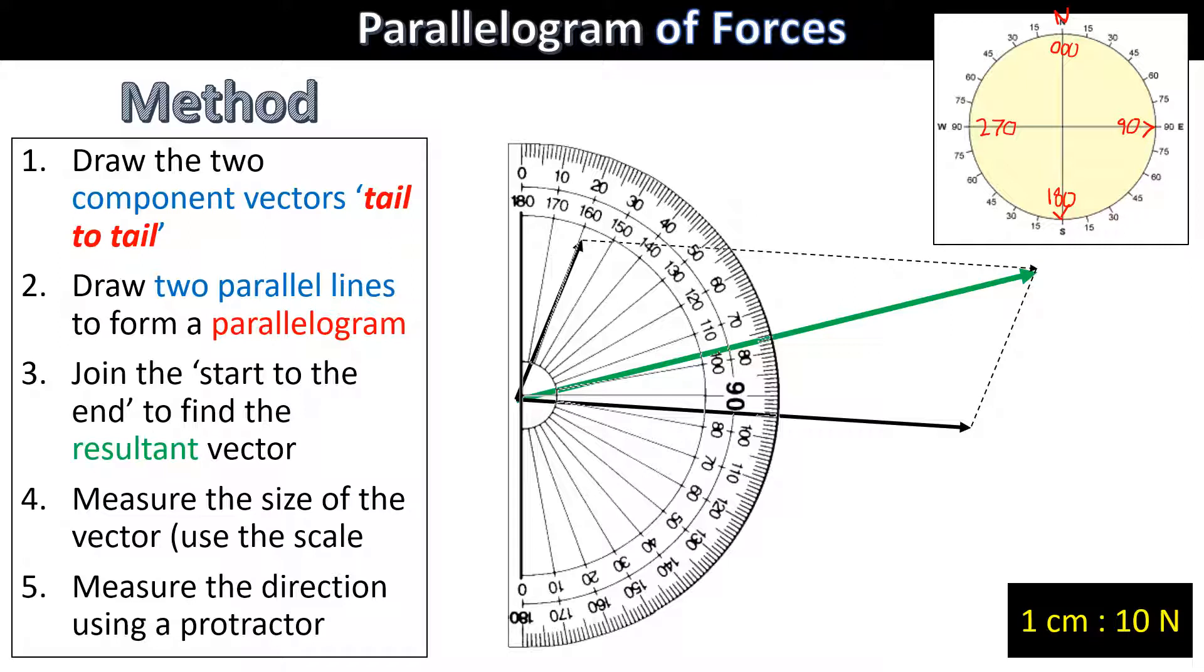Using our compass, we're going to measure this angle here, which is right about there. That looks like a bearing of 076 degrees.